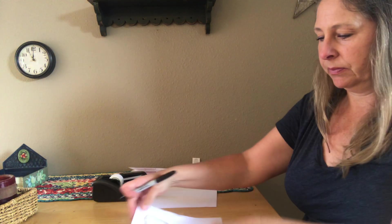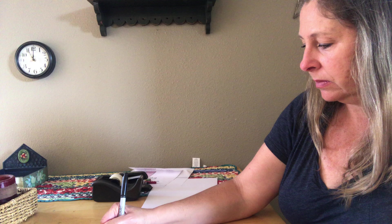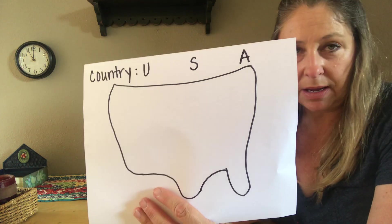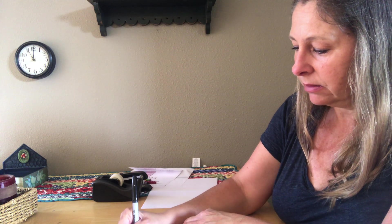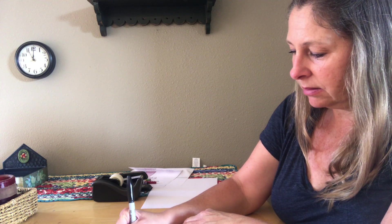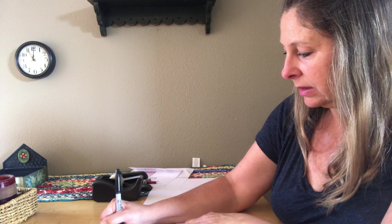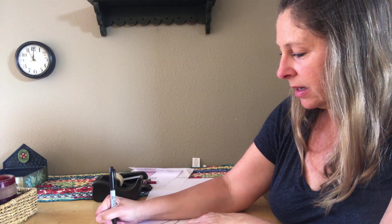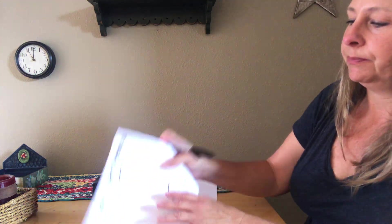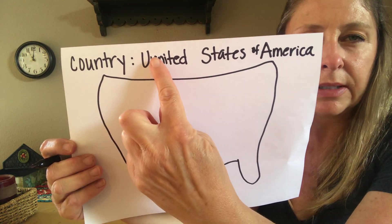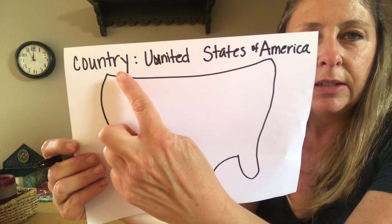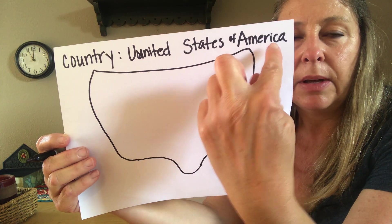I'll give you a clue. It's got a U and an S and an A. So you might see USA sometimes. USA stands for the full name of our country: United — S is for States — and then there's a little 'of' in there — and then America. So our country is the United States of America.